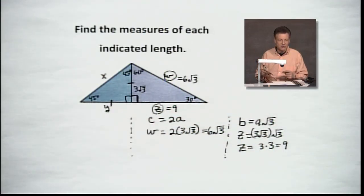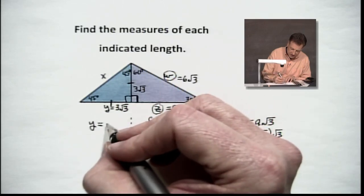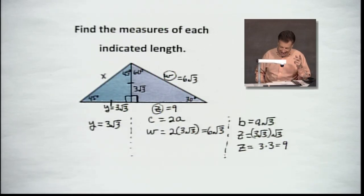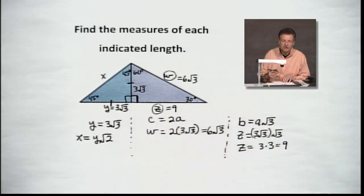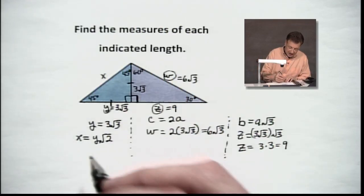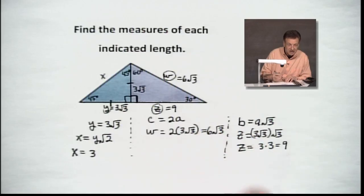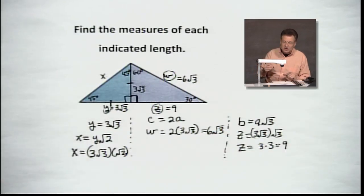Now let's play the other side. The Y being isosceles means both are going to be the same amount. So Y equals three times the square root of three — really easy, because we already knew that from isosceles right triangles. Now, to get to X, our X is going to equal Y times the square root of two. In other words, this leg times the square root of two will get you to the hypotenuse. That's pretty straightforward. Y is three times the square root of three. We're going to take that and multiply it by the square root of two.